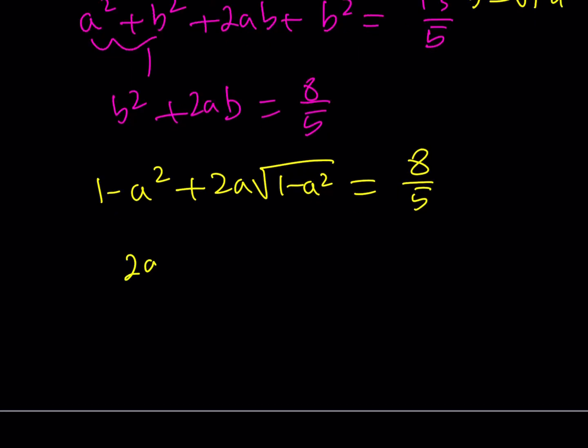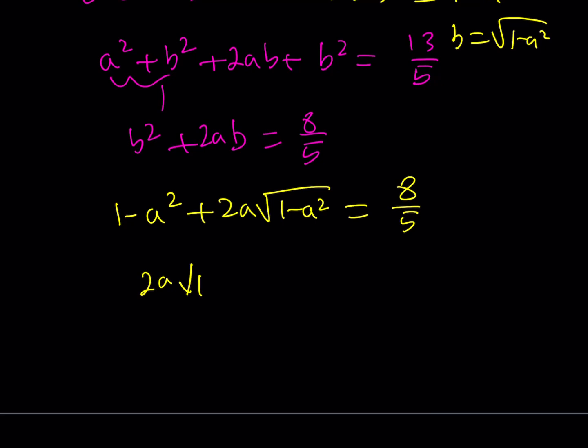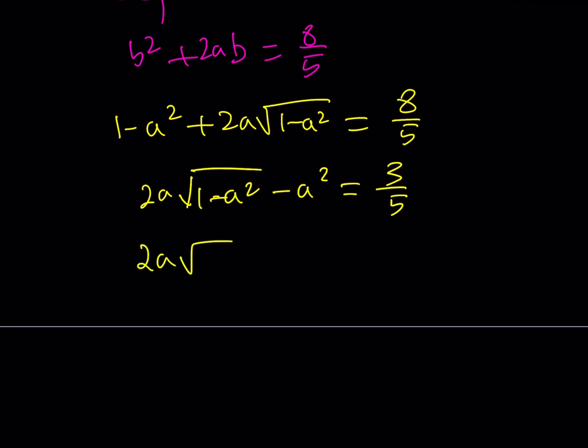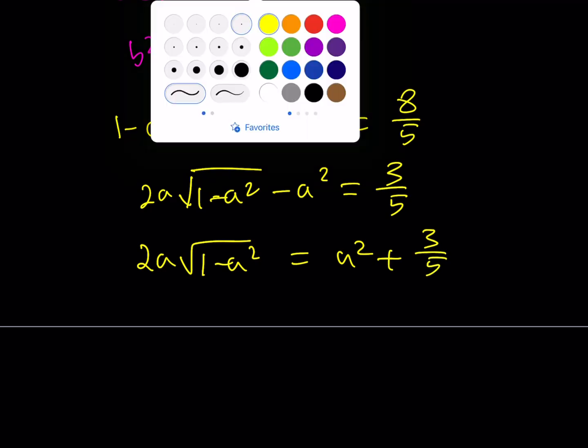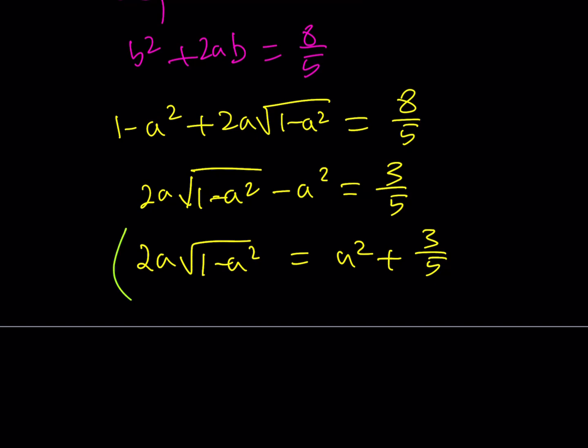If I subtract 1 from both sides and write it this way, 8/5 - 5/5 is going to be 3/5. And now what I'd like to do is isolate the radical here and square both sides. That's what I'd like to do next. If I do that I'll be getting something nicer. Let's go ahead and see how that goes.